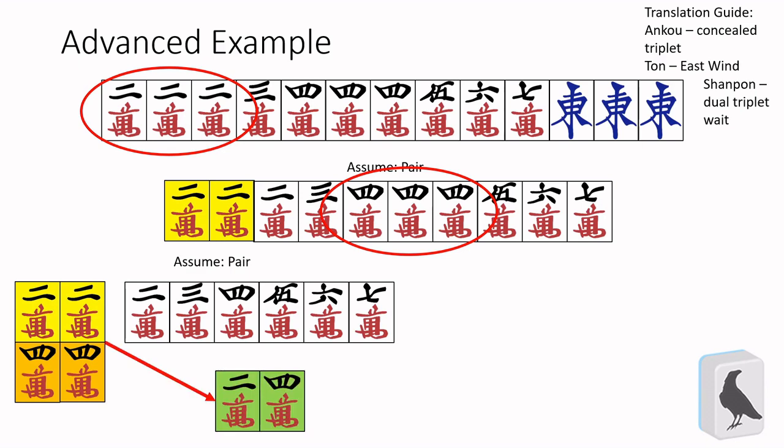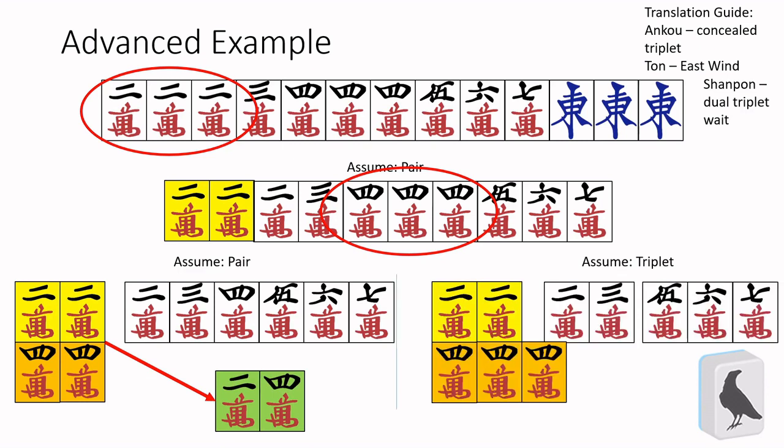Now let's isolate the four-mon as a triplet instead. This breaks up our shape pretty well. Two-mon is locked in our pair, with four-mon being the triplet. So we have a two-three ryanmen, so the shape waits on one-mon and four-mon. Are you following me so far?